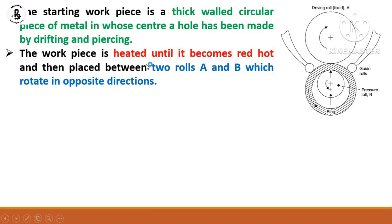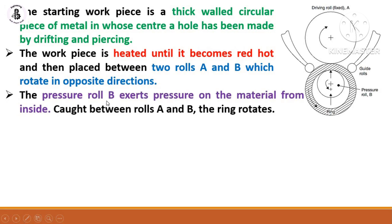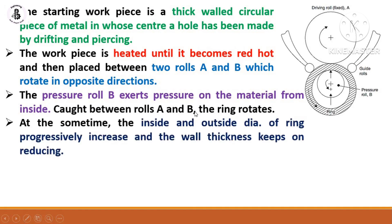By the help of this drifting and piercing, that pressurized roller is being introduced into a thick circular metal workpiece. The workpiece is heated until it becomes red hot and then placed between the rollers A and B which rotate in opposite directions. The pressure roll B exerts pressure onto the material from inside, caught between rolls A and B, and the ring rotates.